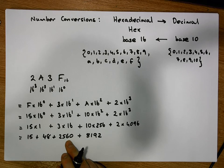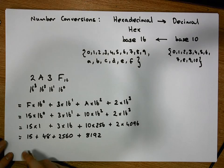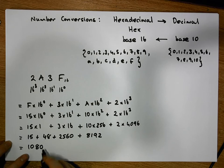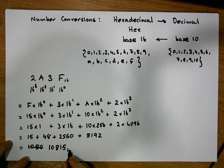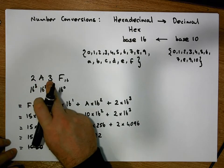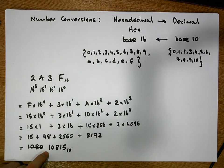So 8192 plus 2560 is equal to 10,752, plus 48 is equal to 10,800, plus 15 gives us 10,815 in base 10. So the hexadecimal number 2A3F in base 16 represents the number 10,815 in base 10.